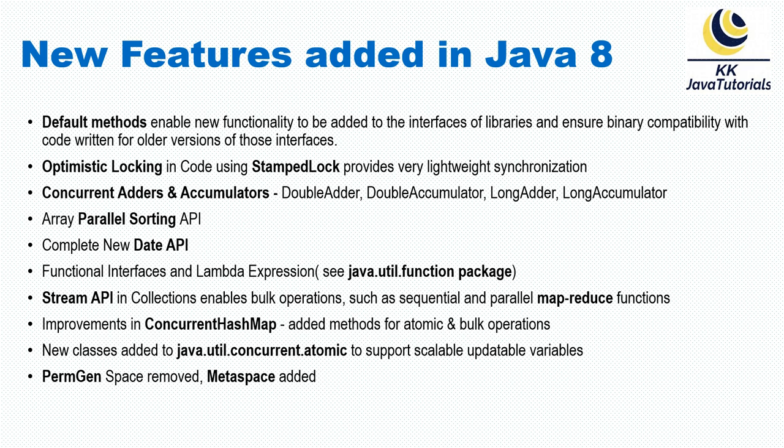Java 8 has added a new package called java.time, and in that package Java has added a complete new date and time API with classes like LocalDate, LocalTime, LocalDateTime, and many more. These classes help us deal with date and time. The beauty of all classes in this package is that they are thread-safe and immutable.